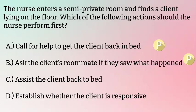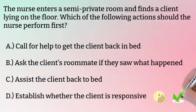Option C: assist the client back to bed — another clear safety option. But now we have three safety options, so we'll mark them all as priority. Option D: establish whether the client is responsive. We now have a physiologic priority. We want to see if the patient lost consciousness from the fall, or if the reason they fell was from a change in mental status. Once we find this out, we can act accordingly to get the patient care and then worry about safety. Therefore, D becomes our priority and that is our correct answer.